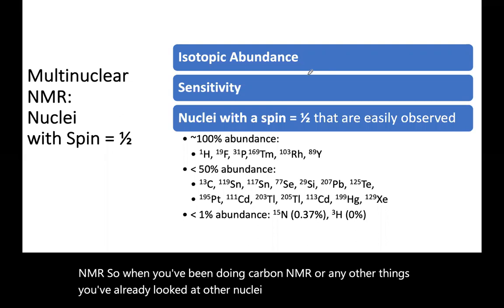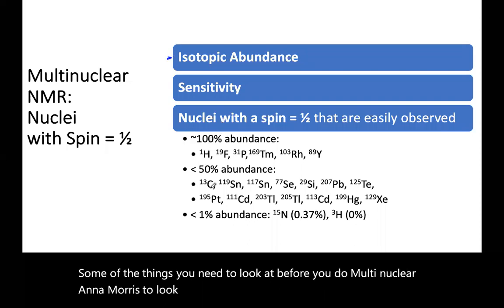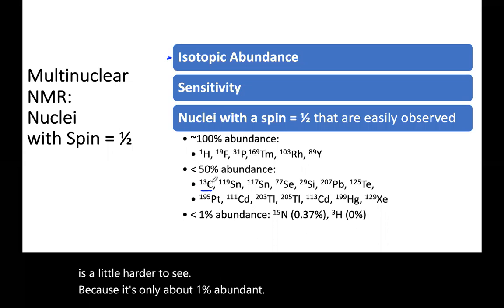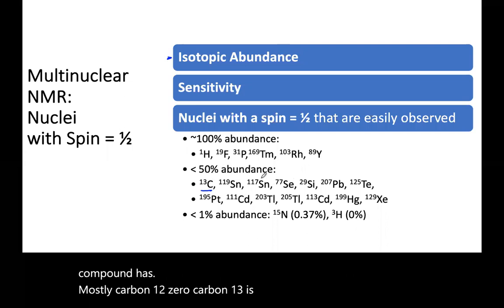But we'll just take a quick look at some of the things you need to look at before you do multinuclear NMR, which is to look at isotopic abundance. So remember, carbon-13 is a little harder to see because it's only about 1% abundant. Ninety-some percent of a random sample of organic compound has mostly carbon-12. So carbon-13 is not very abundant.